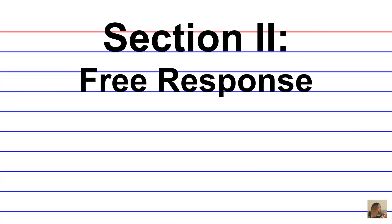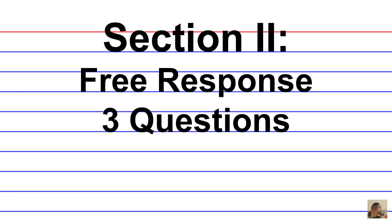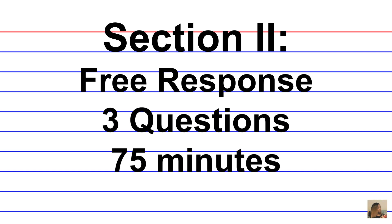Remember that Section 2 consists of free response questions. There are three questions that should be formatted as short essay answers, and you have 75 minutes to complete them, so allocate your time properly. The free response section is 50% of your exam score. You're required to define, explain, and apply geographic concepts and also interpret geographic data.